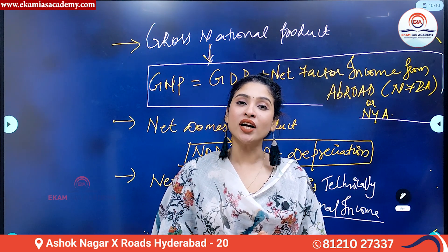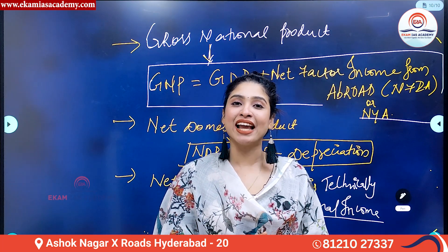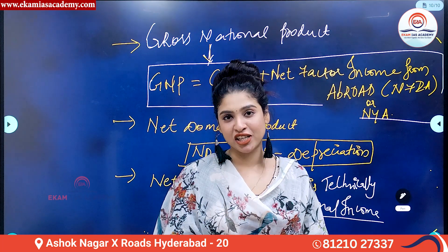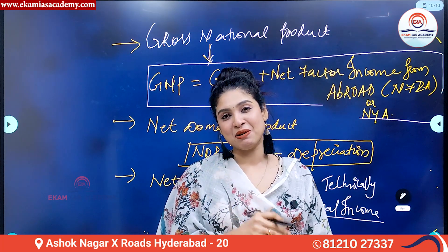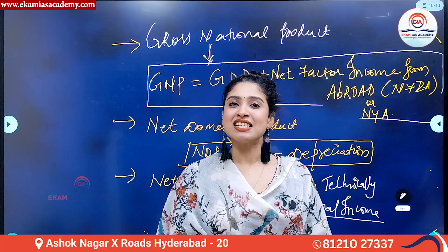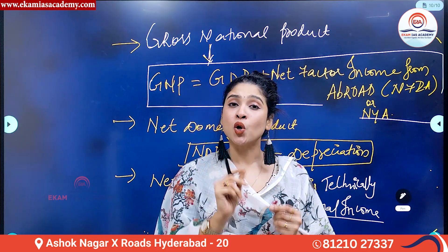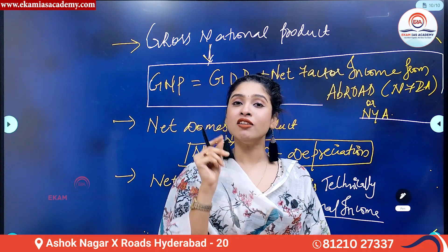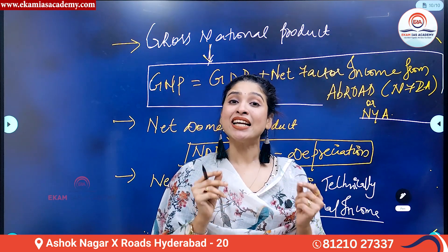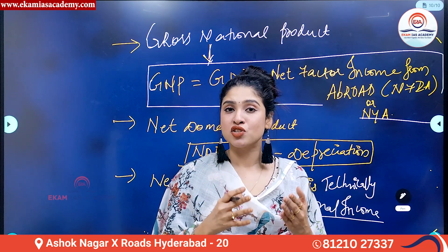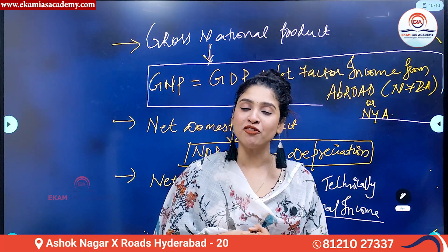Let's look at the other indicators of national income accounting apart from GDP. They are GNP, NDP, and NNP. Gross national product is defined as the total value of all final goods and services produced by the residents or citizens of a country, regardless of their location, for a period of one year.